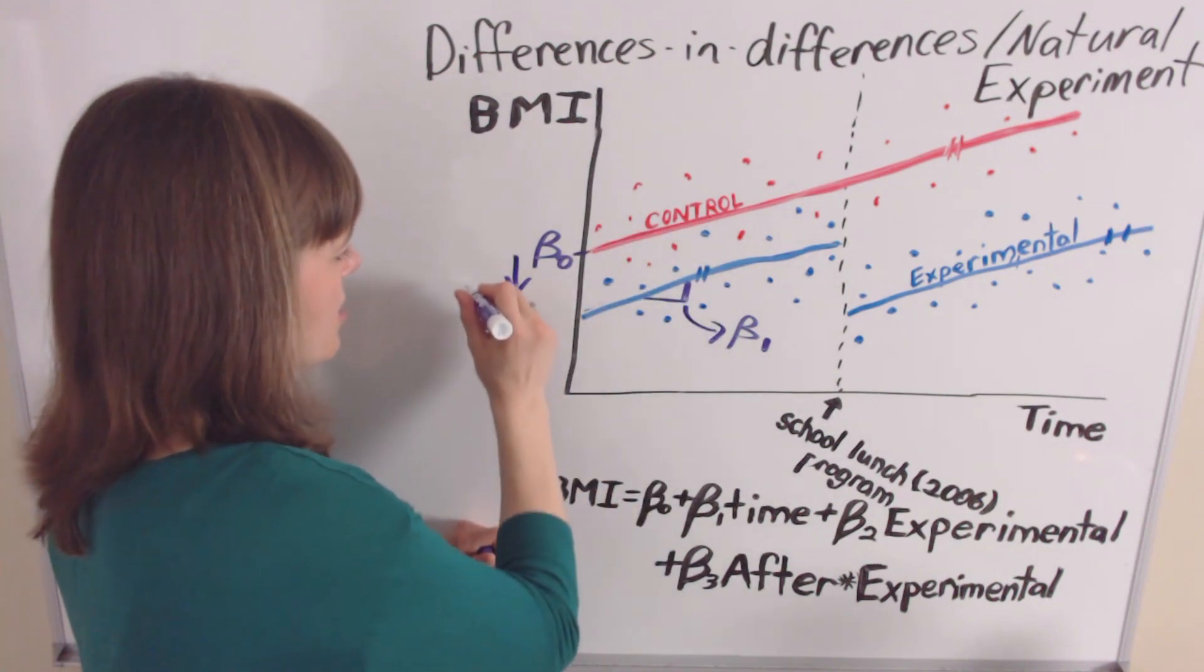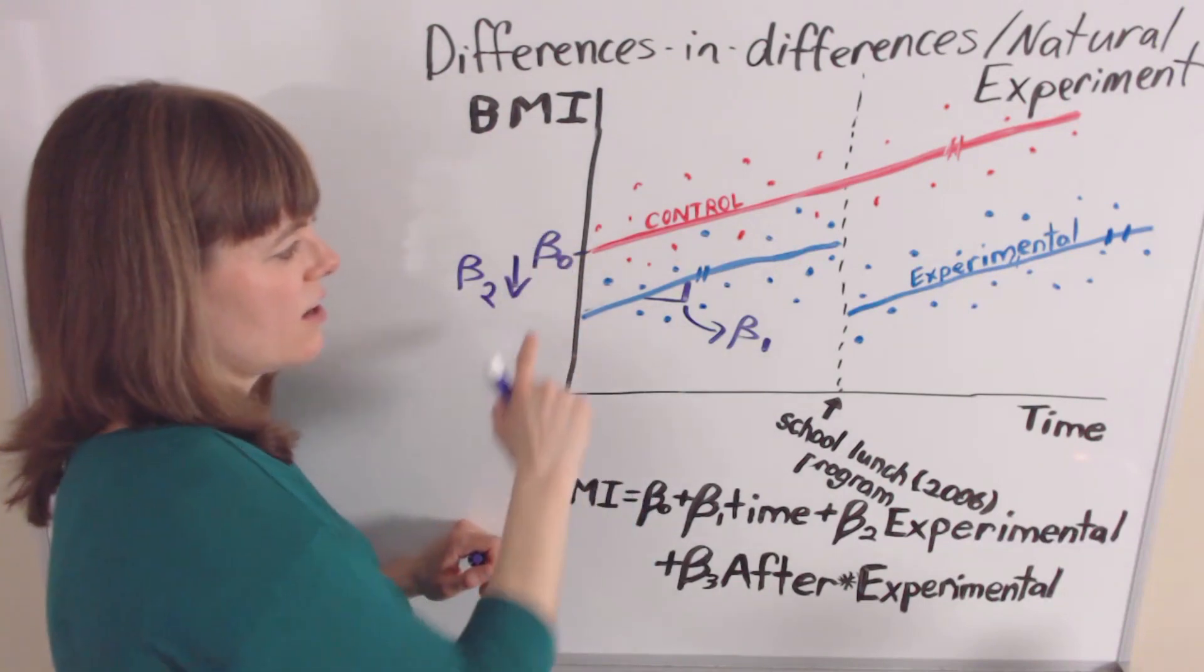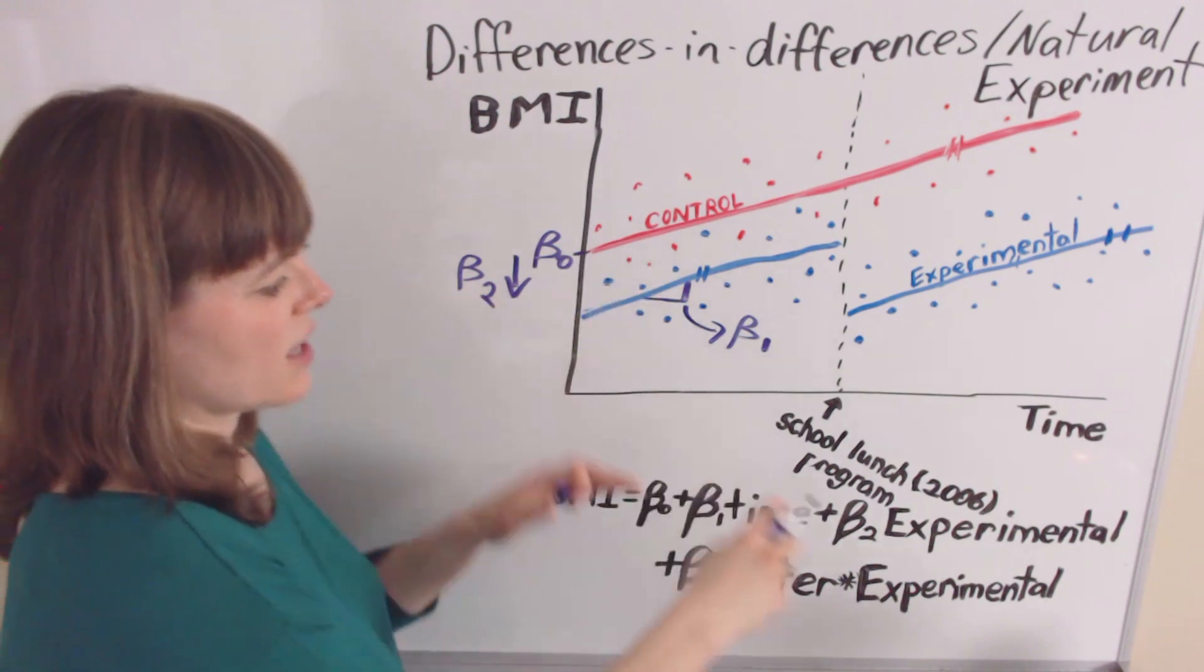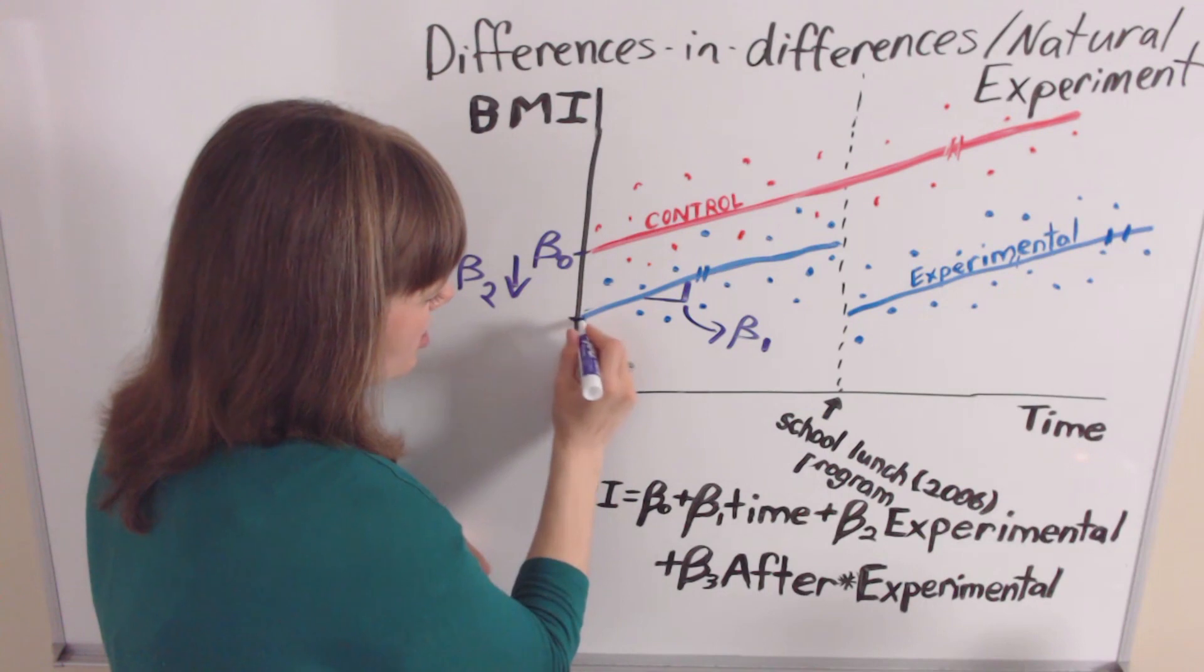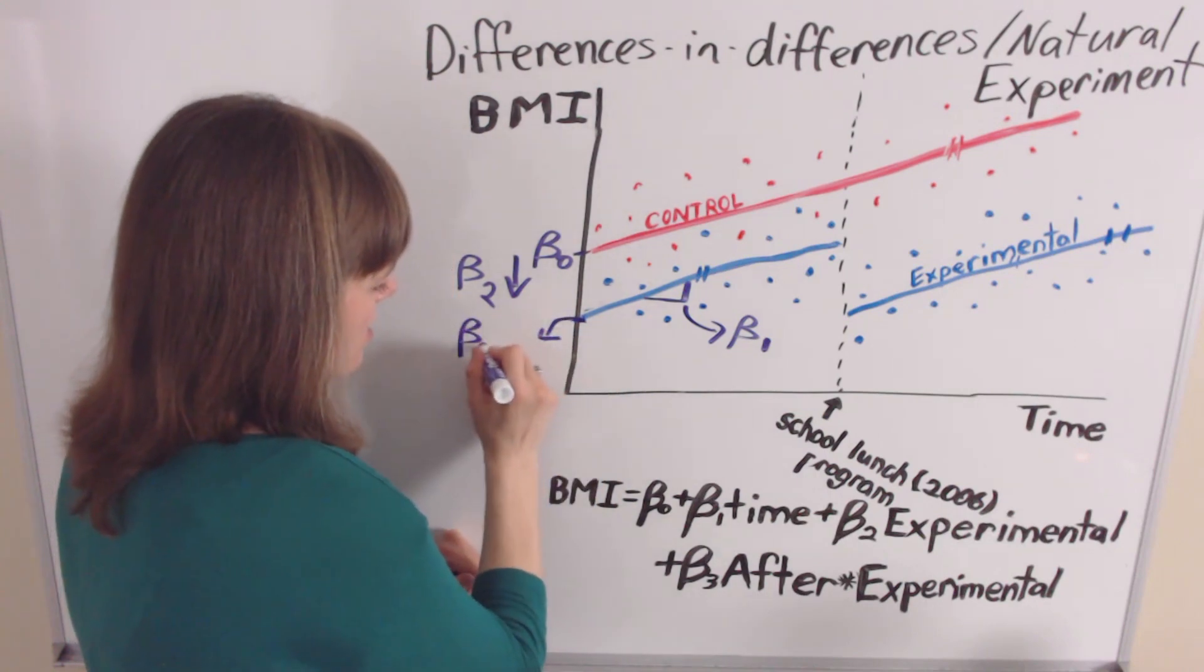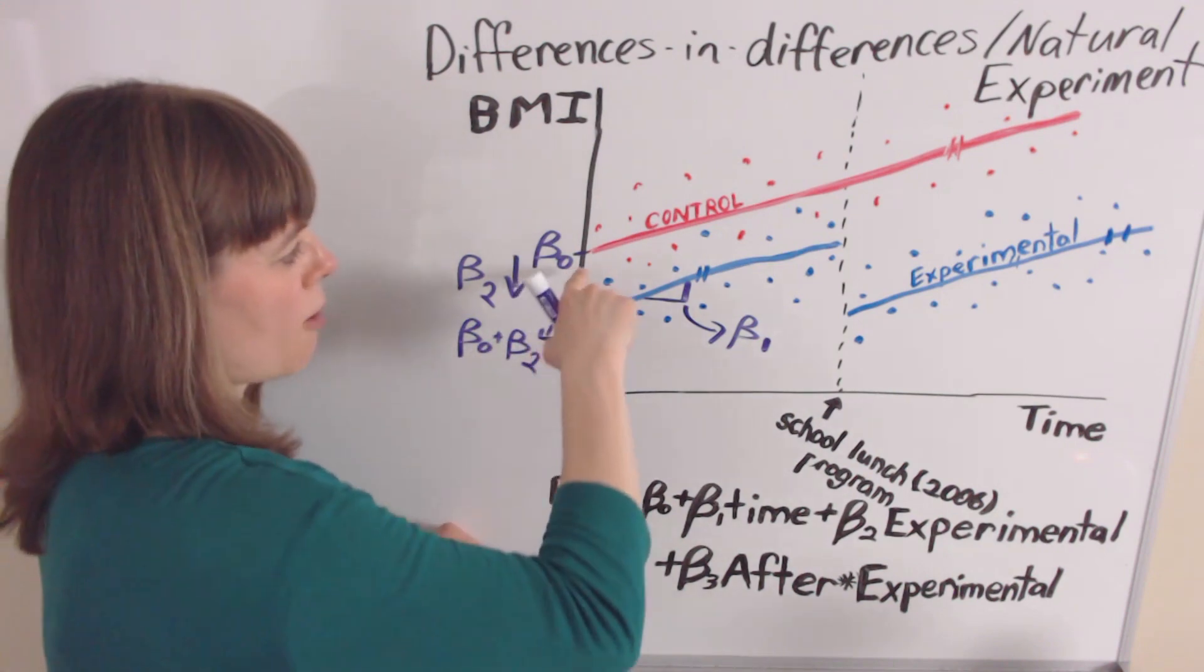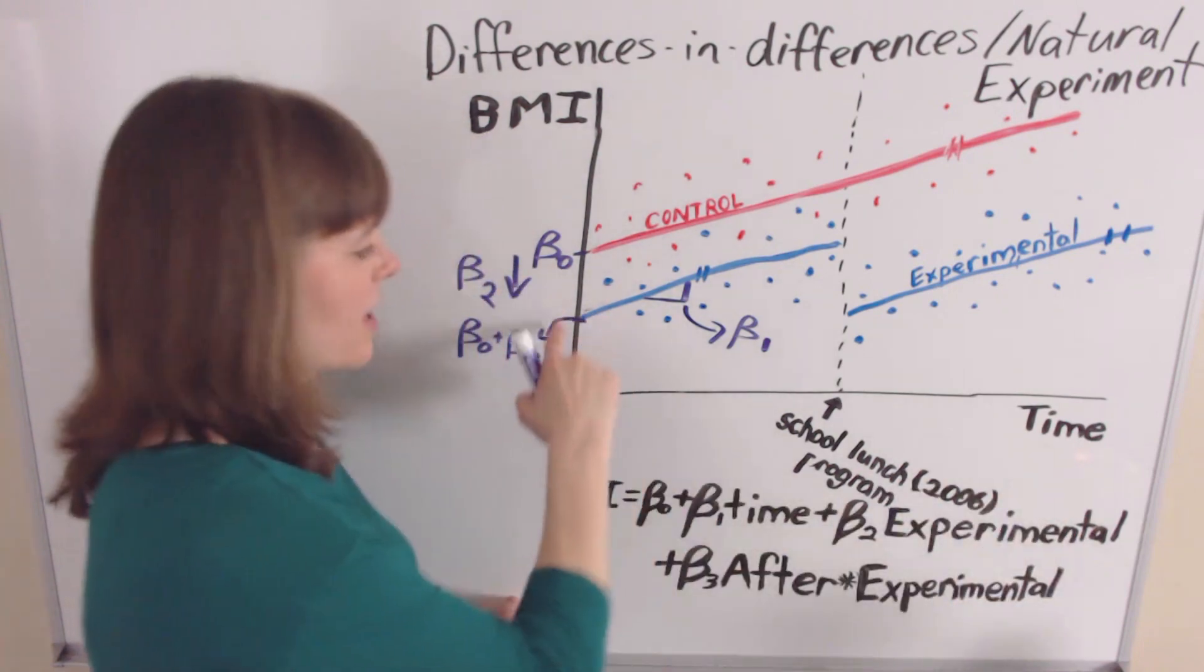So in this case, our beta 2 is going to be our addition to beta naught. In this case, beta 2 is going to be negative because the experimental group starts at a lower point than the control group. So this intercept here is actually going to be beta naught plus beta 2. It's our base intercept for the control group plus the adjustment for the experimental group.